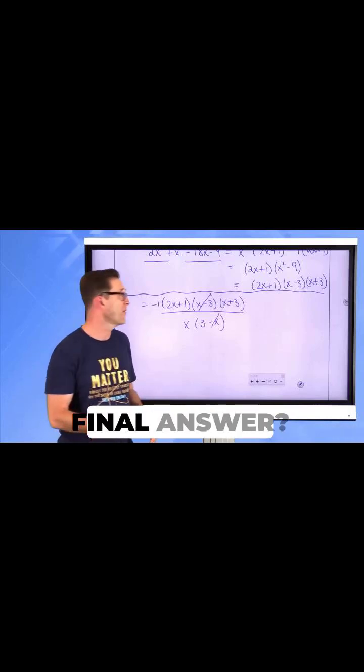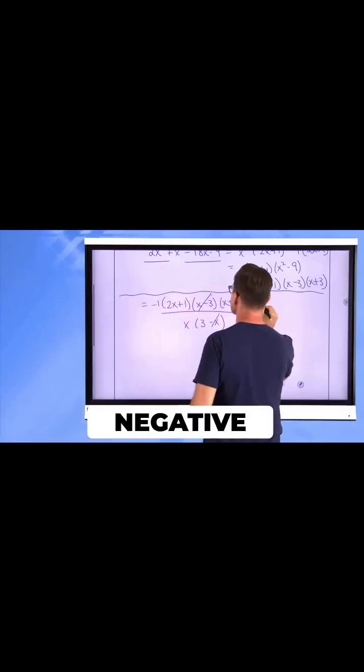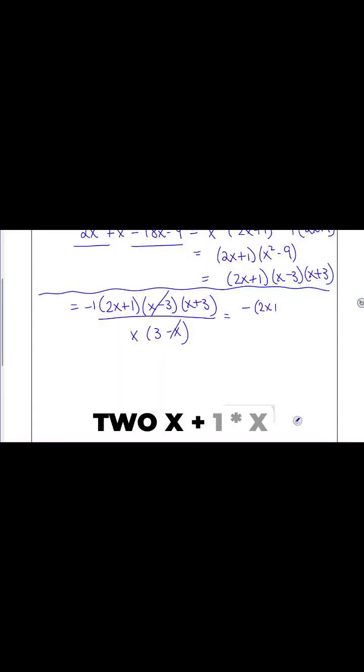All right. So, what's my final answer? My final answer is negative 2x plus 1 times x plus 3 all divided by x. And that's it.